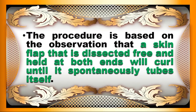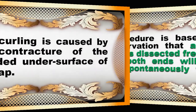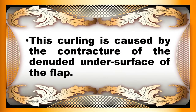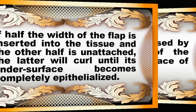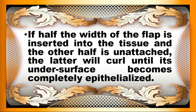The principle of this procedure is based on the observation that a skin flap that is dissected free and held at both ends will curl until it spontaneously tubes itself. This curling is caused by the contraction of the denuded undersurface of the flap. If half the width of the flap is inserted into the tissue and the other half is unattached, the latter will curl until its undersurface becomes completely epithelialized.